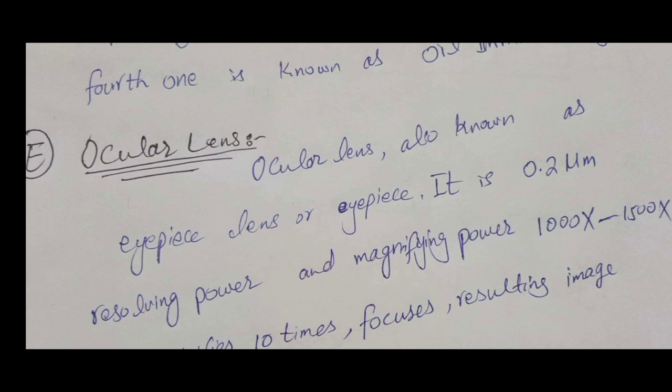The function of the ocular lens is to show the image of the objects captured by the objective lens. Its resolution power is 0.22 microns and the magnifying power is 1,000 to 1,500 times.